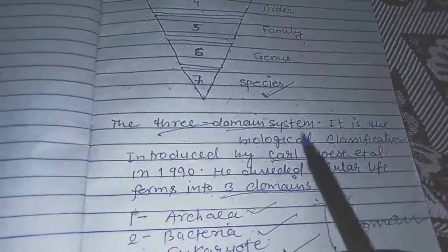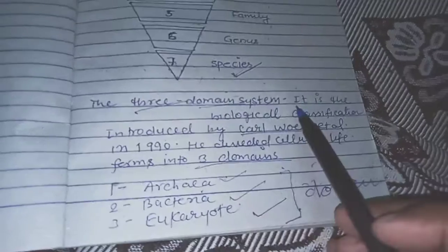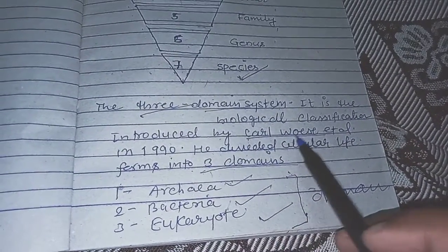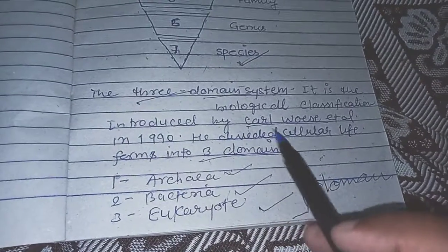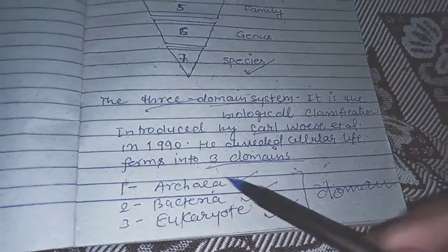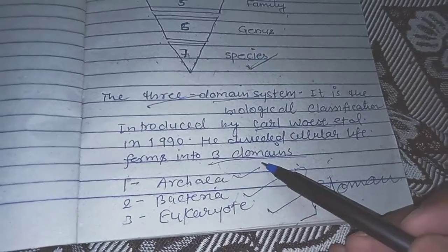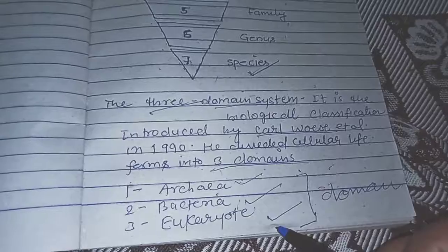Now we talk about the Three Domain System. It is the biological classification introduced by Karl Woese. He divided cellular life forms into three domains: Archaea, Bacteria, and Eukarya.